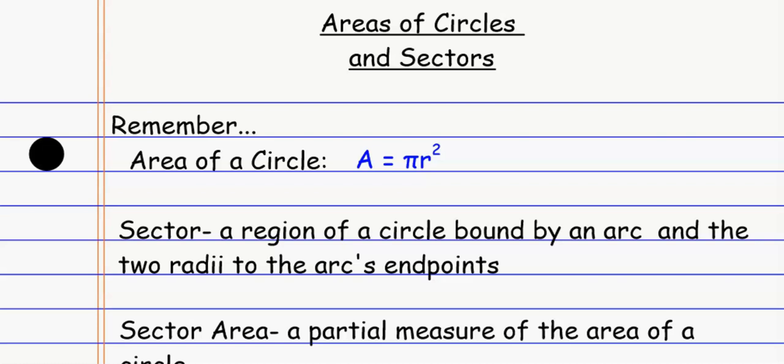A sector is basically like a small region of the circle, almost like a pizza slice out of the whole thing — or a slice of pi. A sector is a region of the circle bound by an arc and two radii to the arc's endpoints, and really that's just a fancy way of saying it's a piece of the circle, like a piece of pizza.